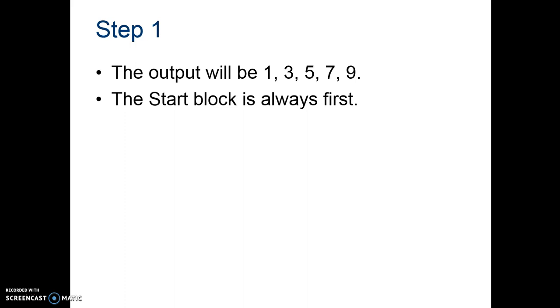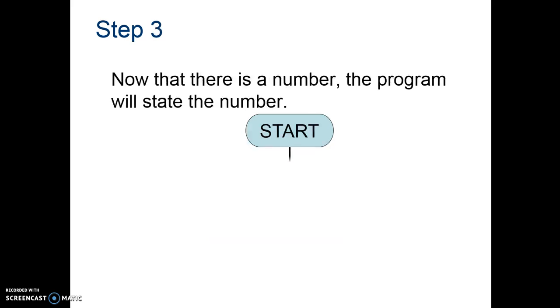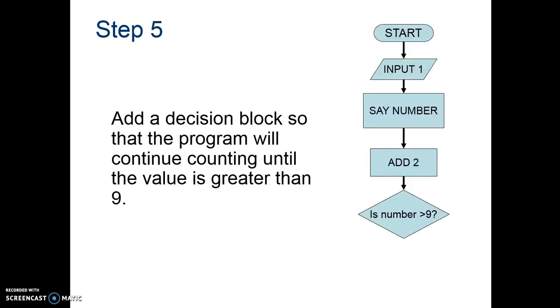So, our output is going to be one, three, five, seven, nine. So, we have the start. The program begins with the number one. So, that's really going to be our input. So, we're going to input one. And so, now that we have that, then we have to say the number, or output the number. Once we've done that, the next step is to add two. But then, after we add two, we have to do a check.